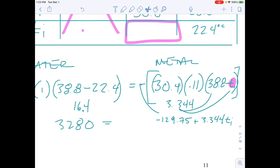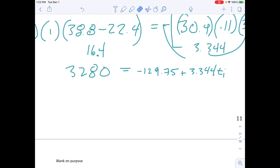I'll kind of bring my equation together a little bit here with the magic of an iPad and notability. Now I have to get TI by itself. So I'll do 3,280 plus 129.75, 3,409.75 equals 3.344 TI. I divide them out. And I'm going to end up with, drum roll please. I end up with 1,019.6.